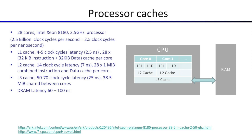The Intel 8180 has an L1 cache that is separated into an instruction cache and a data cache. This keeps the instruction cache from being wiped out by data. The L1 cache is the smallest — 32 kilobytes for the instruction set and 32 kilobytes for the data set. It is also the fastest, taking about four to five clock cycles, which translates to about 2.5 nanoseconds to retrieve data.